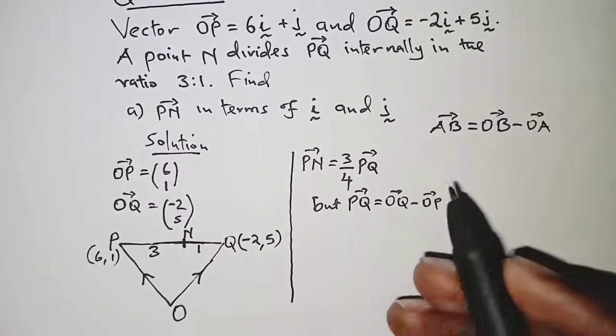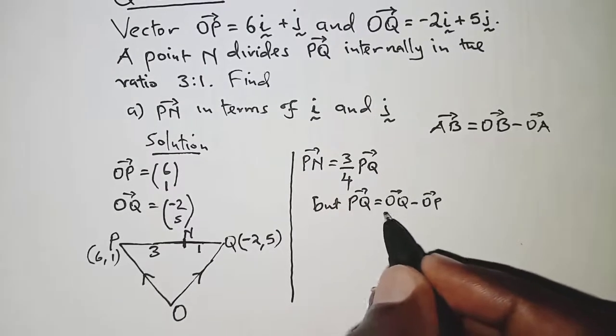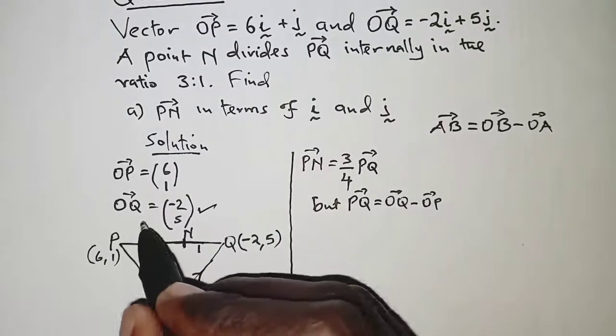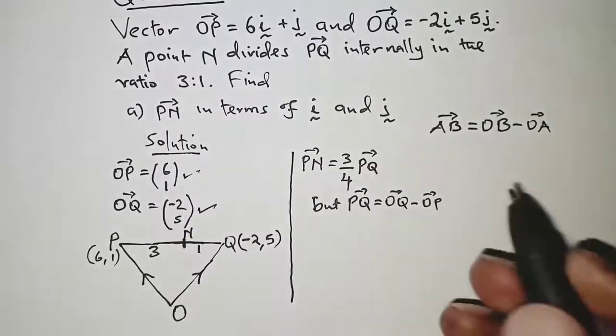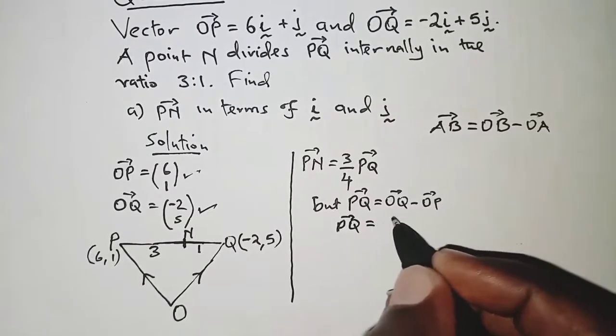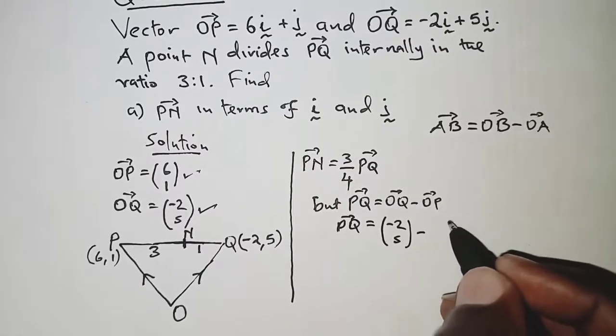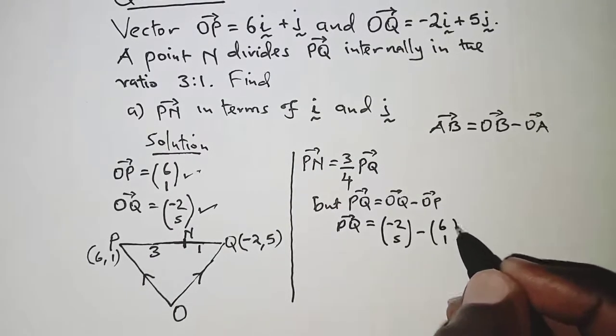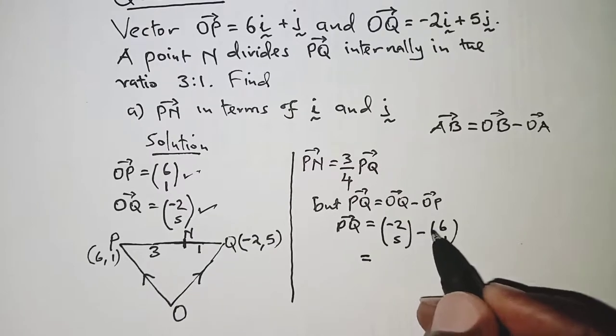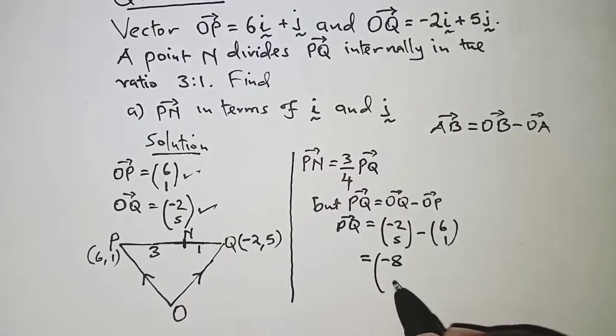So applying this right here, PQ is OQ minus OP, but OQ, already we have them expressed as column vectors. OP is also right here, so PQ would just be OQ which is (-2, 5), minus OP which is (6, 1). So this should give us negative 2 minus 6, that is negative 8, and 5 minus 1, that is 4.